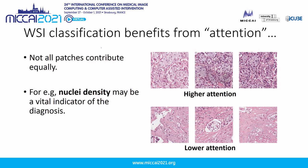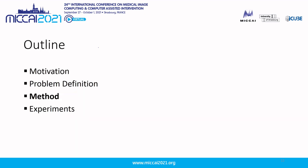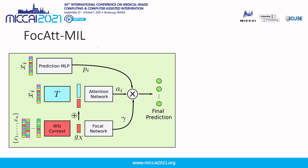Apart from these two properties, we would also like our model to have attention. A whole slide image classification can benefit from attention since not all patches contribute equally towards the diagnosis. For example, nuclear density may be a vital indicator for diagnosis. Now let's start with describing our proposed method called FOCAT-MIL, a multi-instance learning method with focal factor and attention.